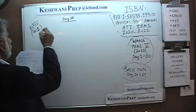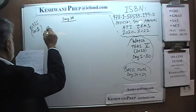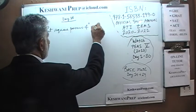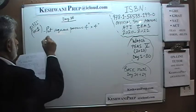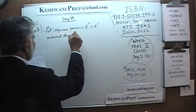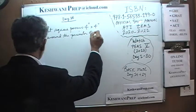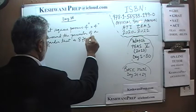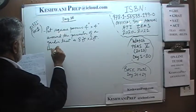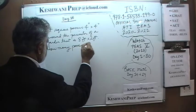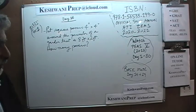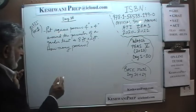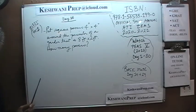Number 1. It says that we are going to put square pavers — square pavers that are 4 inch by 4 inch — around the perimeter of a garden that is 8 feet by 2 feet. The question simply is: how many pavers do we need to buy? Let's draw a picture to make it easier to visualize. Our garden is 8 feet by 2 feet.